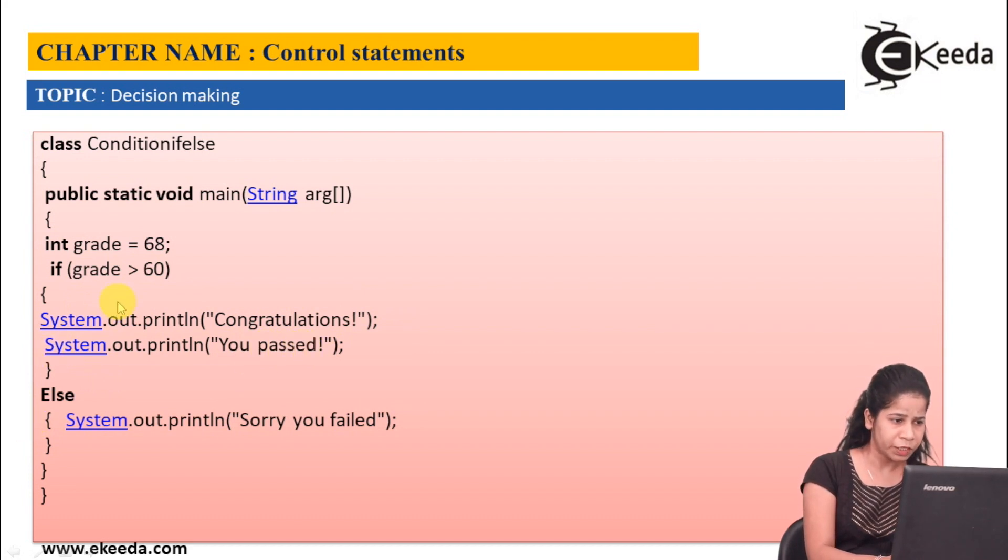Then if this condition is false, then I have another flow to be executed. Inside else I am having System.out.println statement and I am showing the message that sorry, you failed.